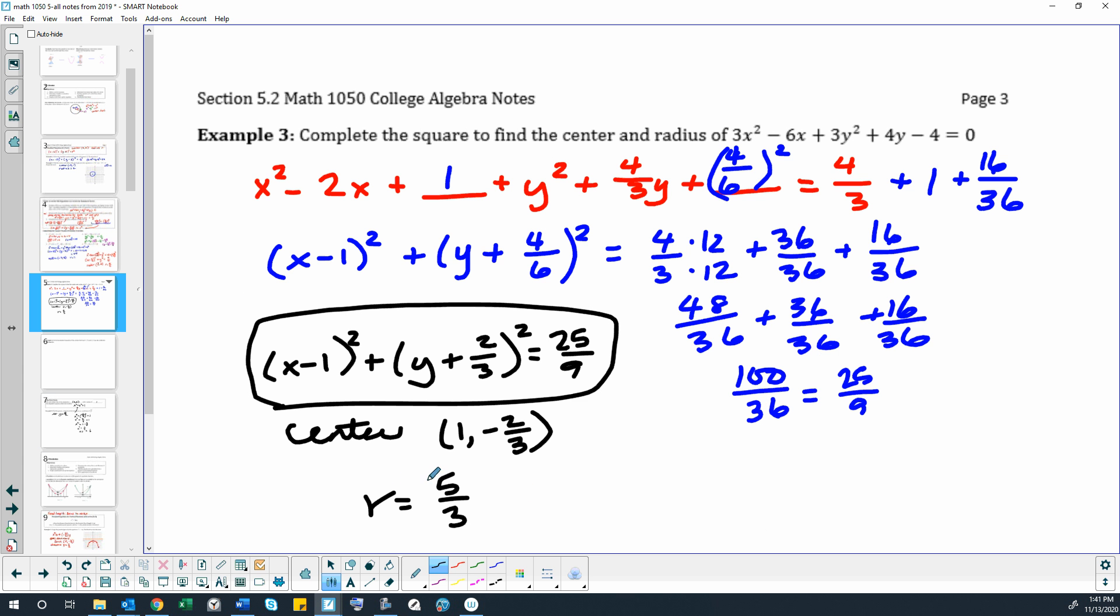So you know, in the other problems we've done today, like when we found the radius of this circle, I just did the square root of 25 ninths. So square root of 25 ninths is 5 thirds. And I didn't worry about the plus or minus because it's a distance and distances are positive.